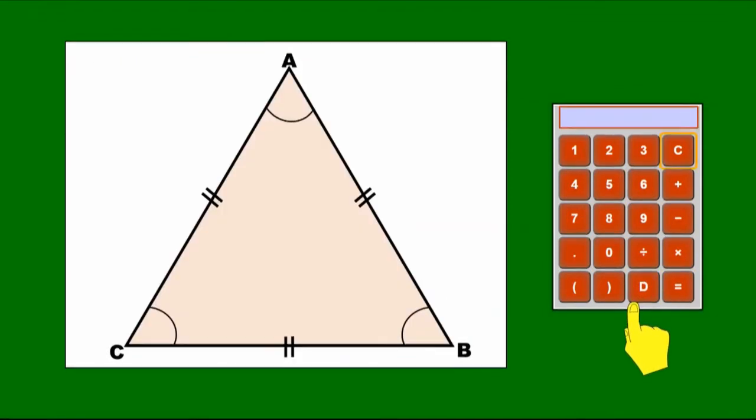Now this triangle, we aren't told any of the angles, but we can see that it's an equilateral triangle. The three sides are all the same length. You can tell by the little dashes in the middle of the sides that those three sides are all the same length.